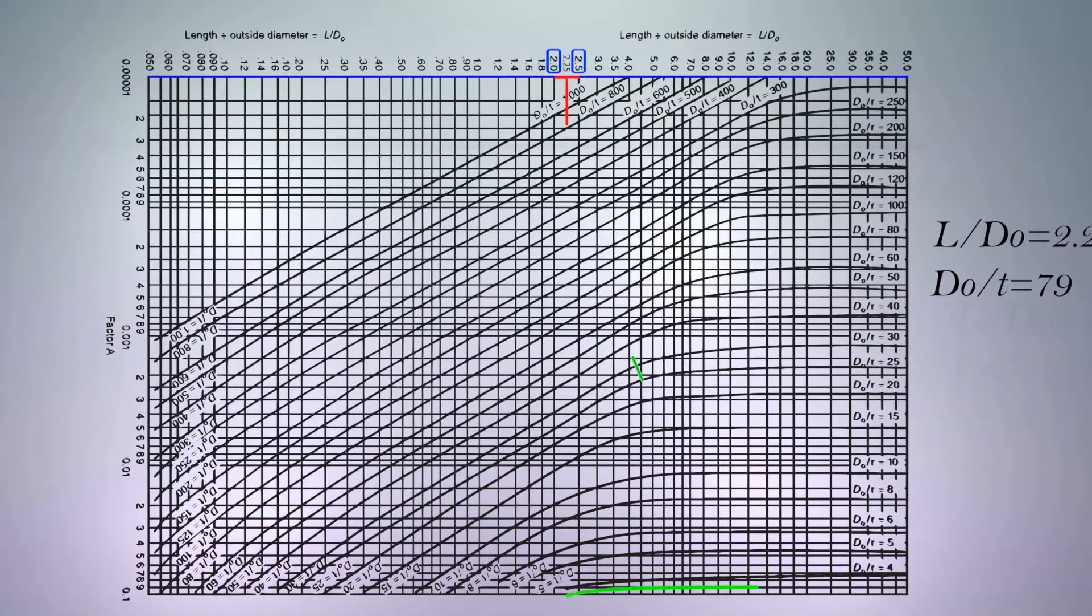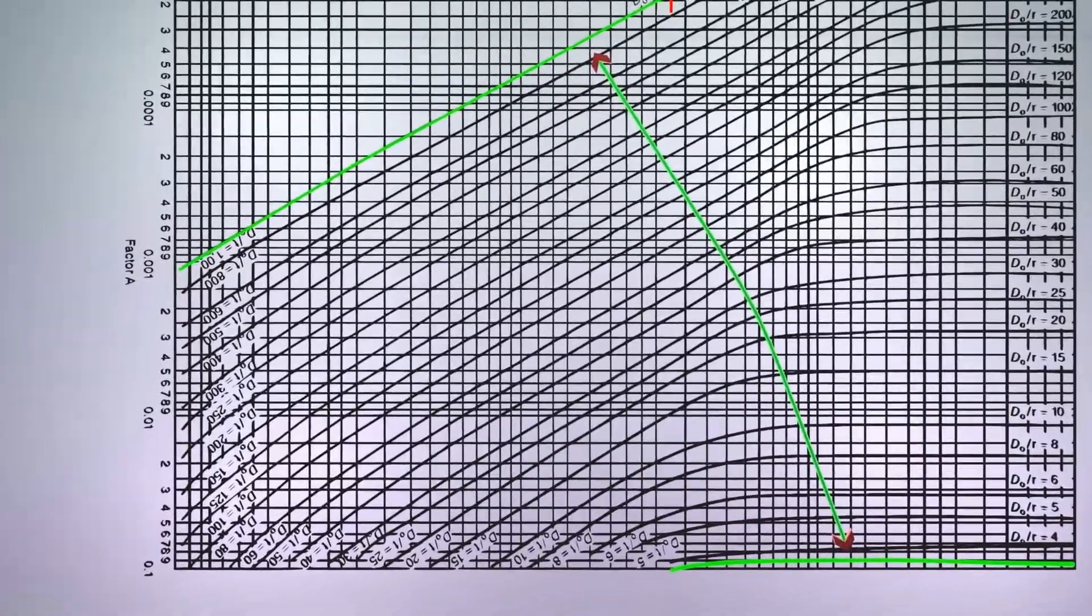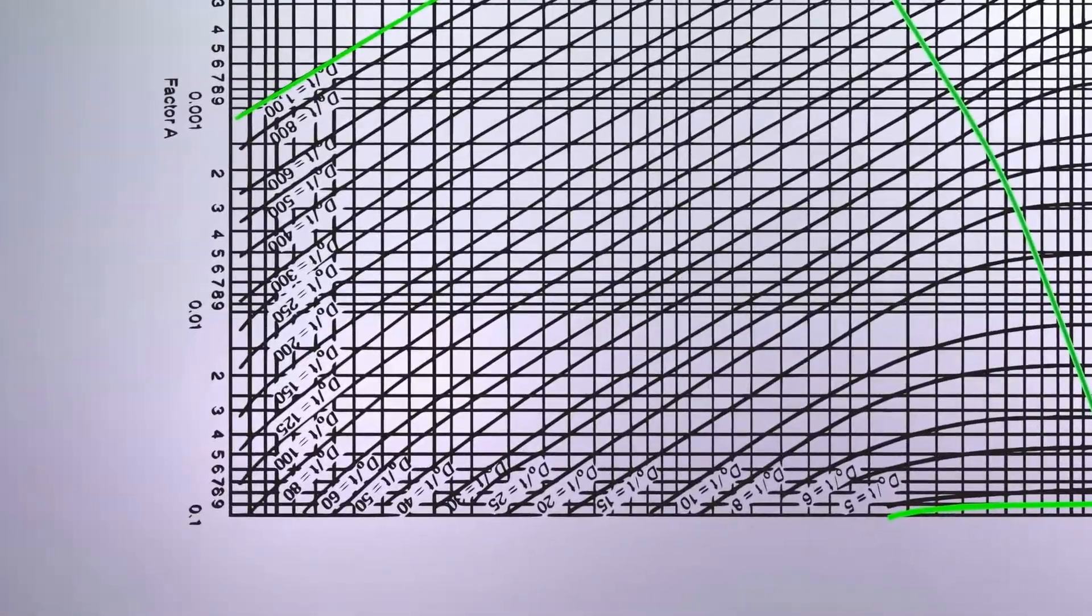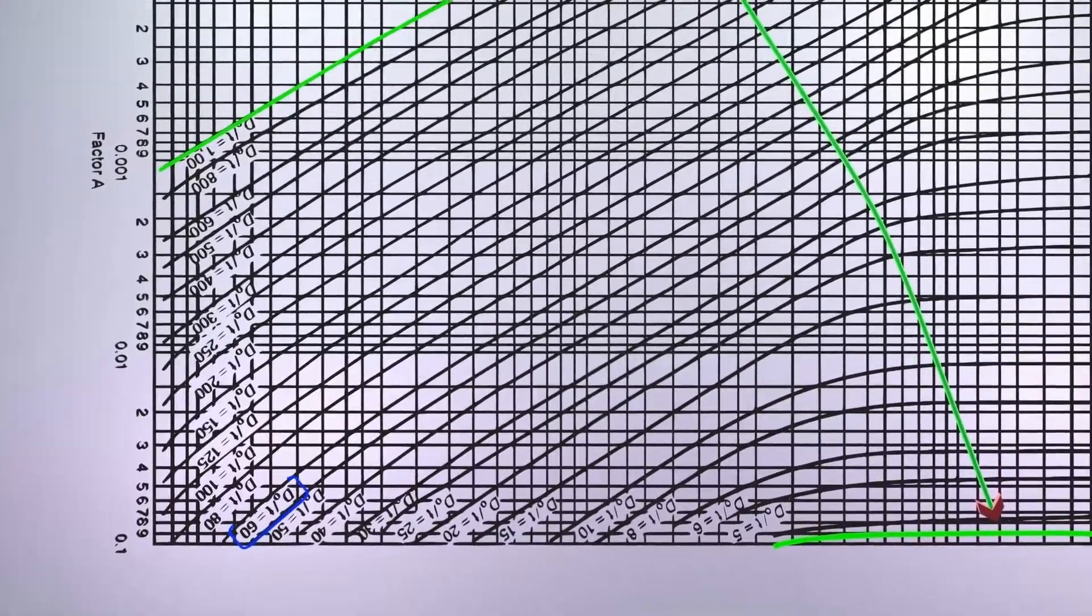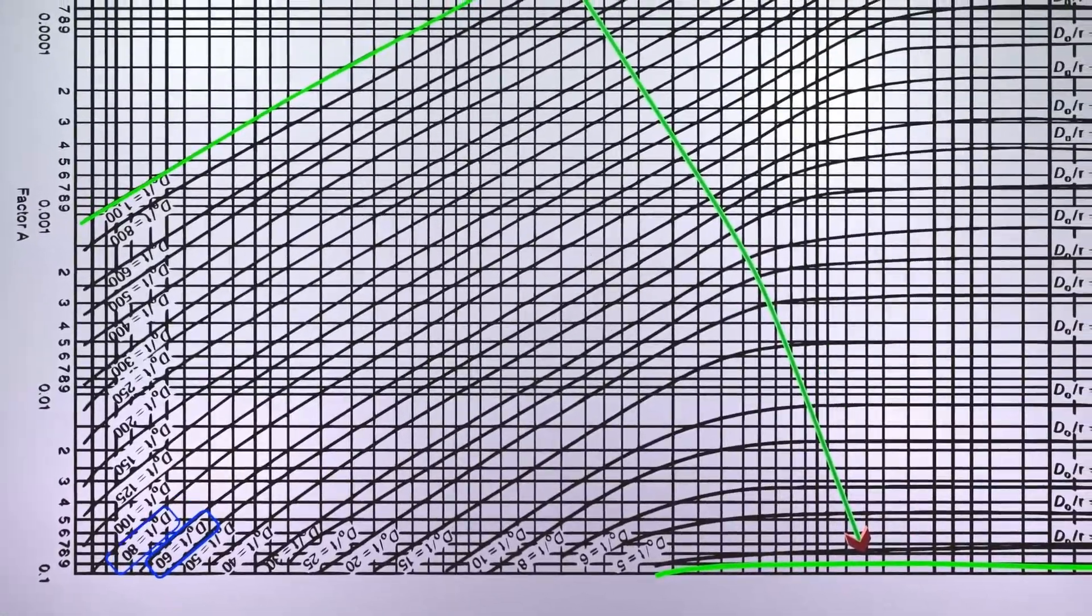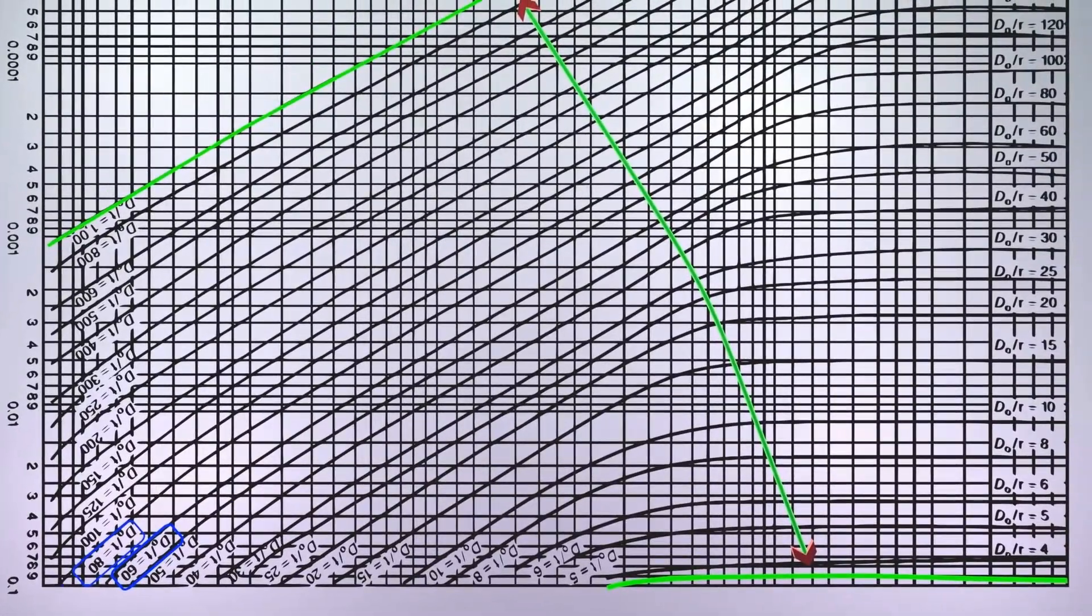And here are the curves starting from 5 for D0 by T and going up to 1000. We have to select for 79. No direct curve is available for 79, and we have to self-draw. Here are curves for 60 and 80. The midpoint of these two curves obviously would be 70.